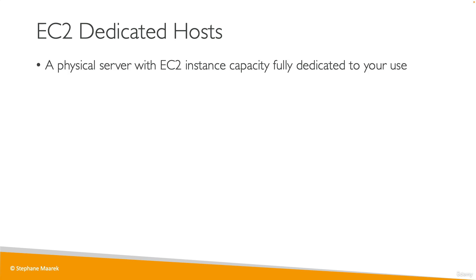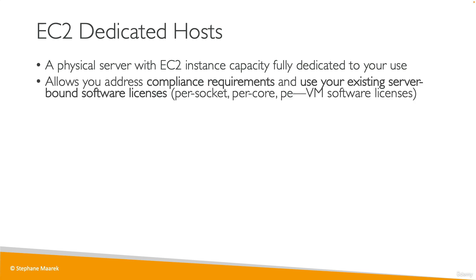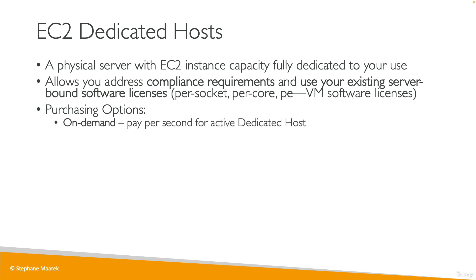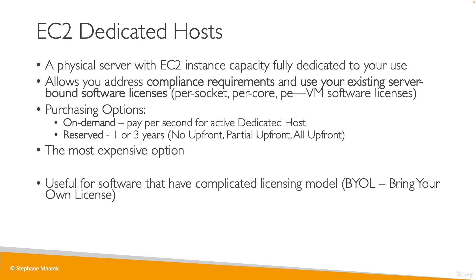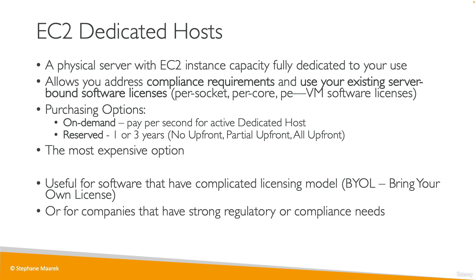Next we have dedicated hosts. You get an actual physical server with EC2 instance capacity fully dedicated to your use case. You want dedicated hosts when you have compliance requirements or when you need to use existing server-bound software licenses billed based on per socket, per core, or per VM software licenses — this is the kind of use case where you need access to the physical server. For dedicated hosts, you can pay on-demand per second, or reserve them for one or three years. They're the most expensive option in AWS. A key use case is bring-your-own-license, or if your company has strong regulatory or compliance needs.